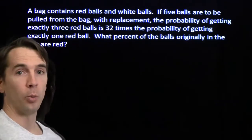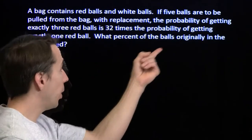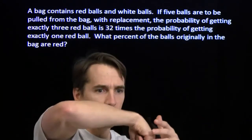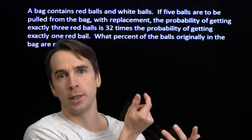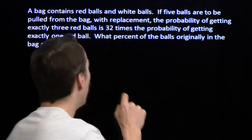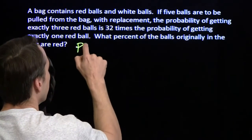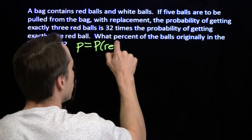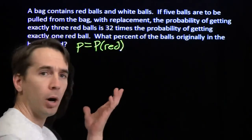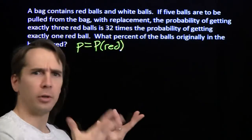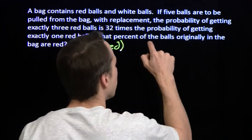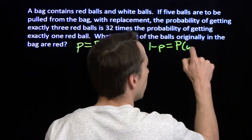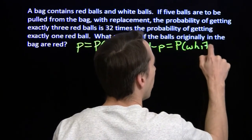We need a variable for what we're looking for. The percentage of balls originally in the bag that are red is just the probability that if you reach in the bag and pull out one ball, you get a red ball. We're going to call that P. That's the probability of getting a single red ball if you reach in the bag once. All the other balls that aren't red are white, so one minus P is the probability of getting a white ball.